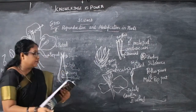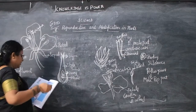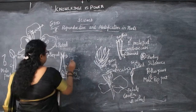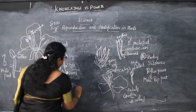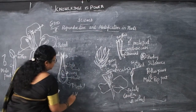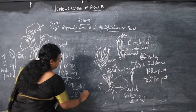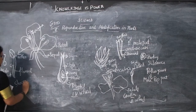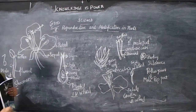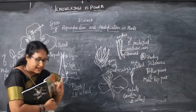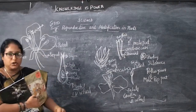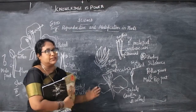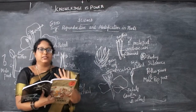The fourth whorl of a flower is the pistil. So the four whorls are: first whorl is calyx, second is corolla, third is stamen (androecium), and the fourth whorl is pistil (gynoecium).